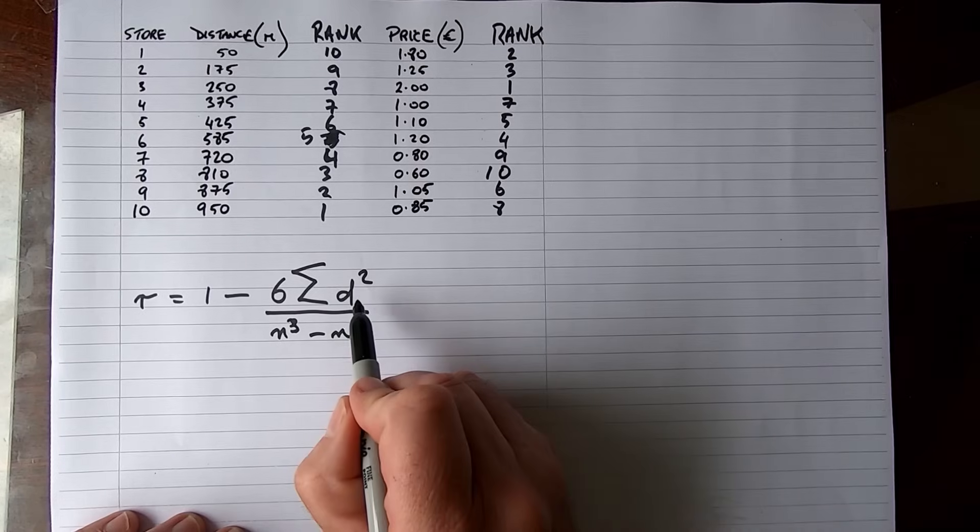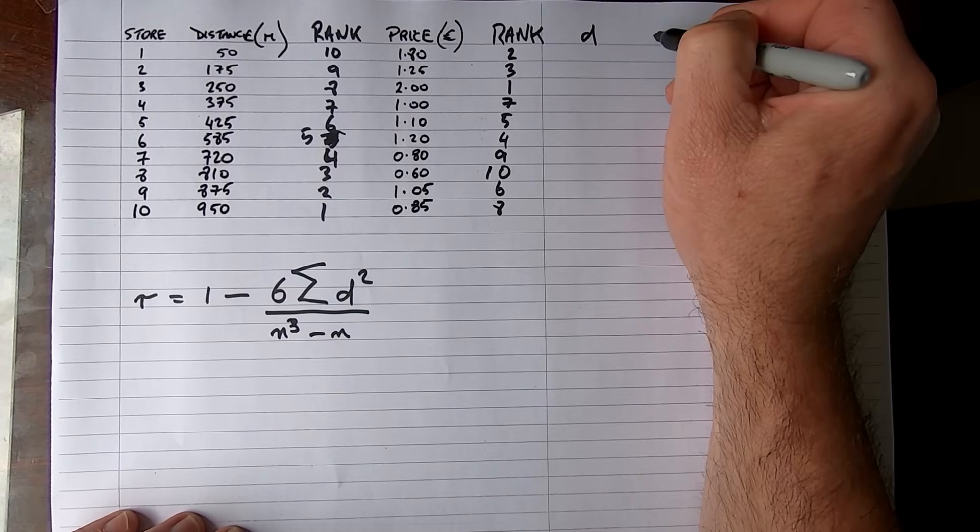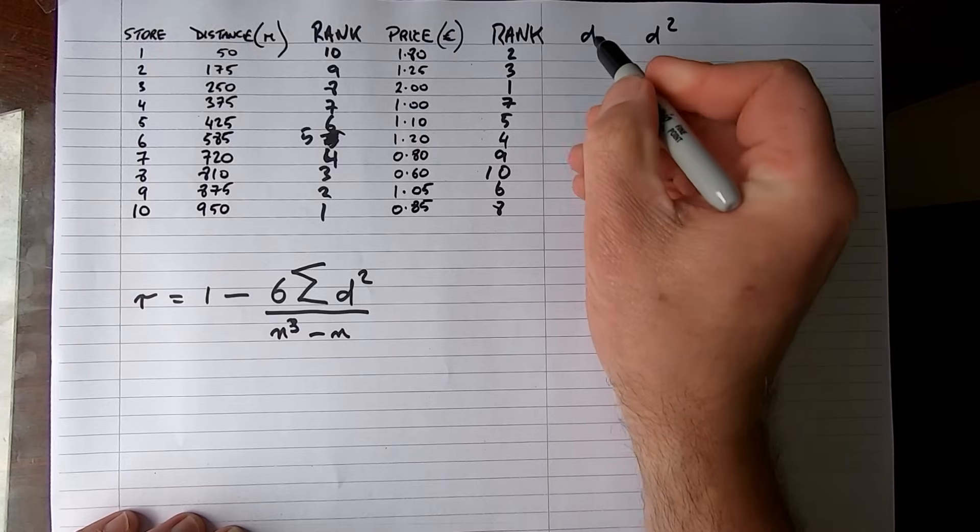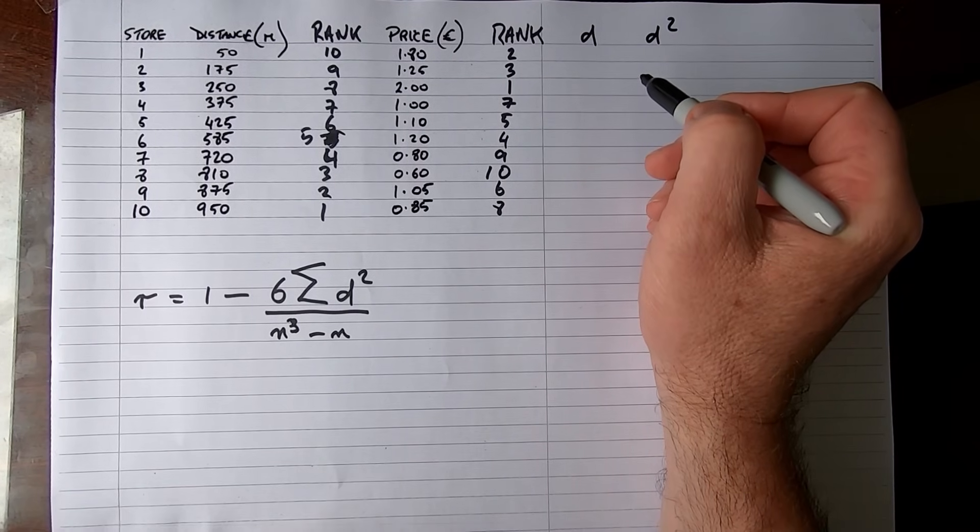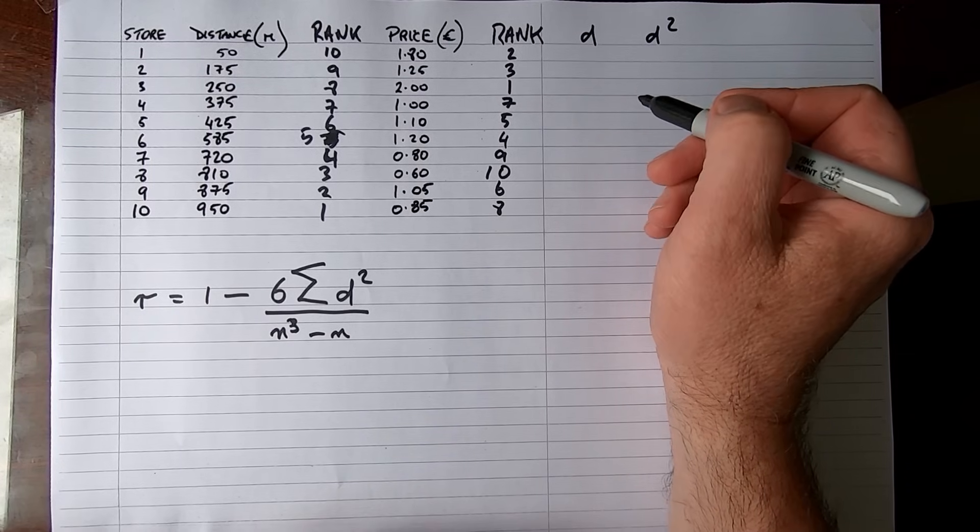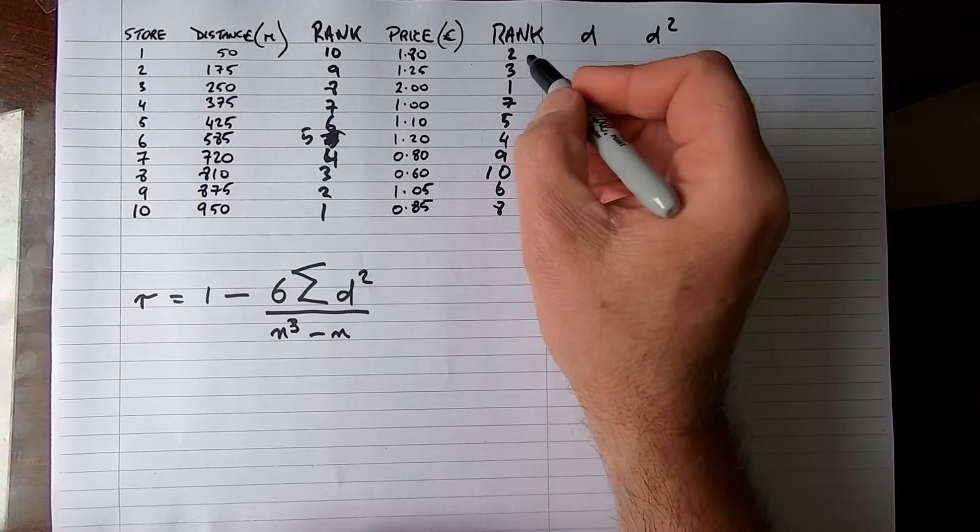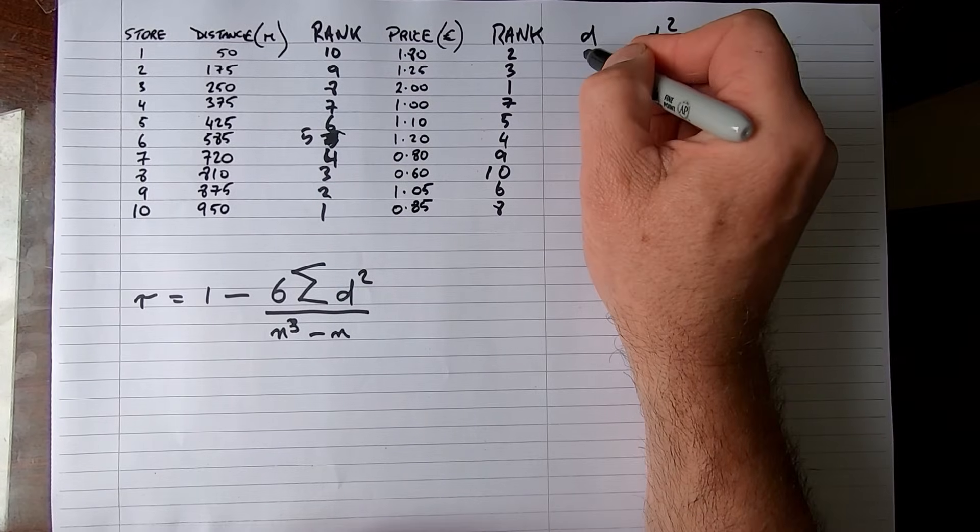So these are the two ranks. Now the d in our formula is the difference between the ranks, so I'm going to need to put d here and then I'm going to need to square that value. Let's put the d's in first. Most of these we can do in our head—we've got some easy values to work with here. The difference here is the difference between the ranks: 10 minus 2 gives us a value of 8, 9 minus 3 gives us a value of 6, 8 minus 1 gives us a value of 7.